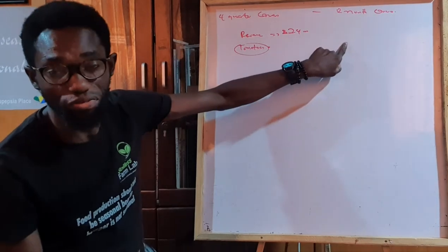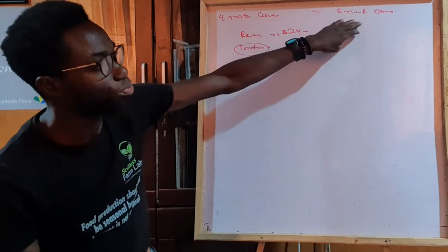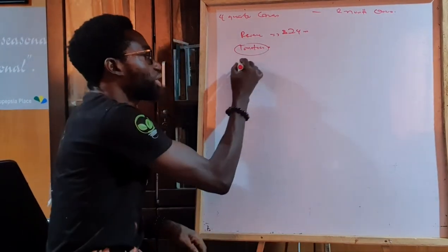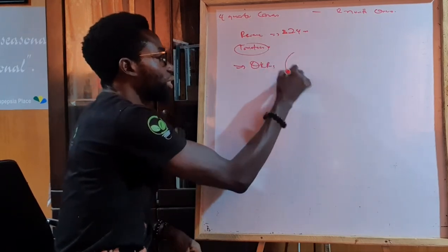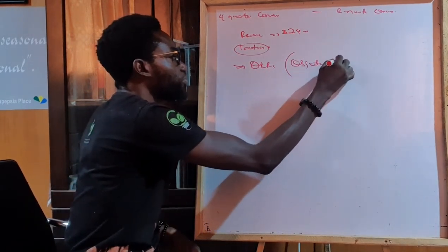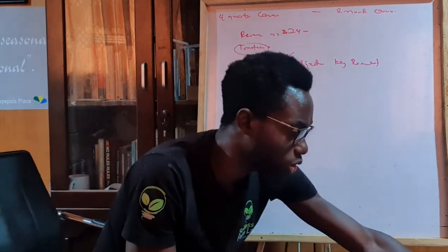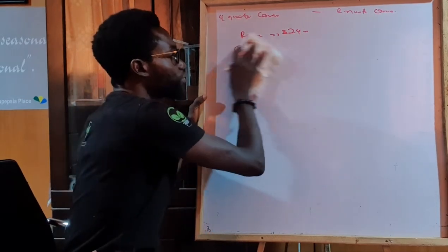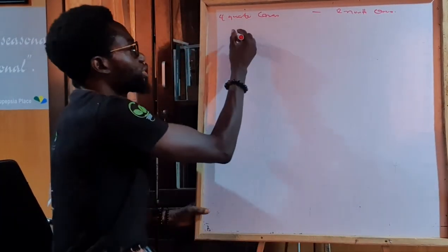Before I start inputting this into my canvas, I need to first develop what we call an OKR — that simply means Objectives and Key Results. So we start first with our OKR. The O, like we said, is your objective.